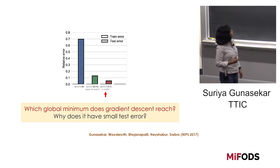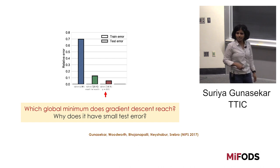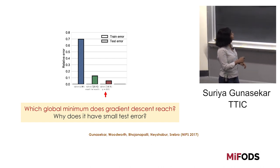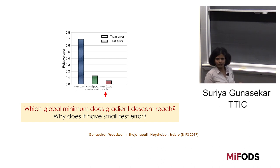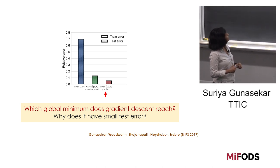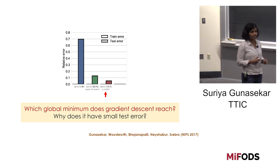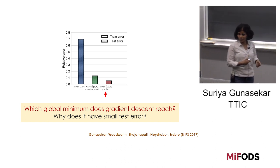When we run gradient descent on these two objectives, both algorithms give us zero training error solutions. But surprisingly, gradient descent on the factorized objective gives a solution which also has good test error—a better minimizer for generalization. And even more surprisingly, instead of doing exact line search for the step size, using small step sizes gets you to an even better solution. So we have three algorithms, all solving the same objective but with different parameterizations and step sizes, yet ending up with different solutions.